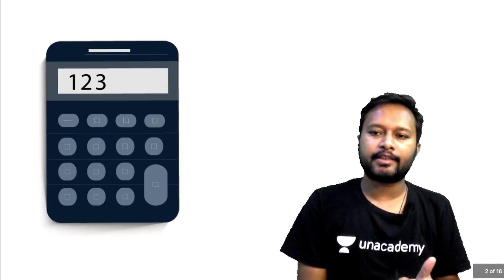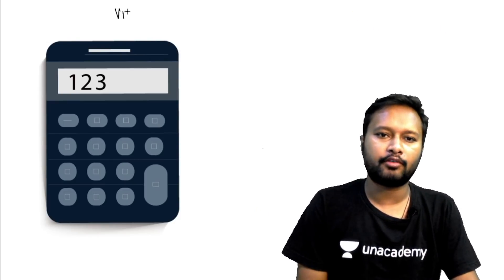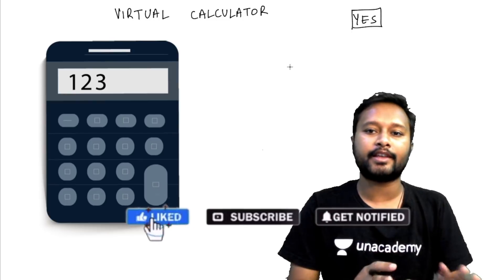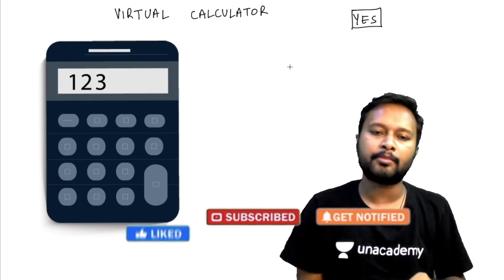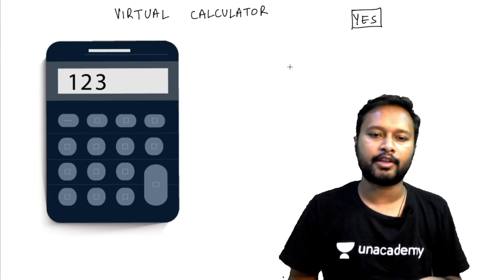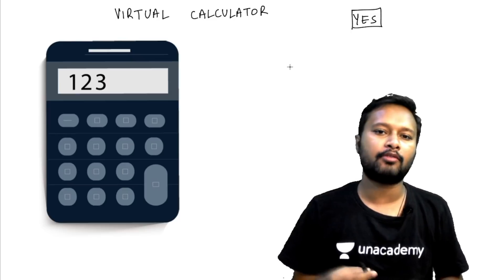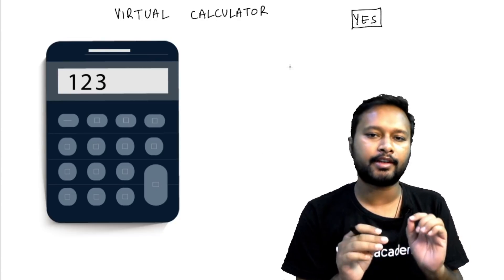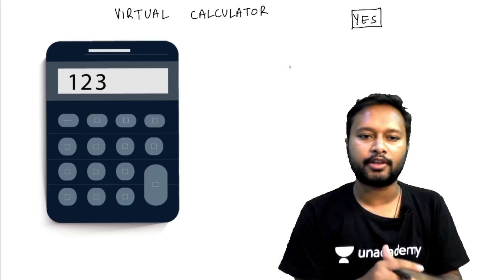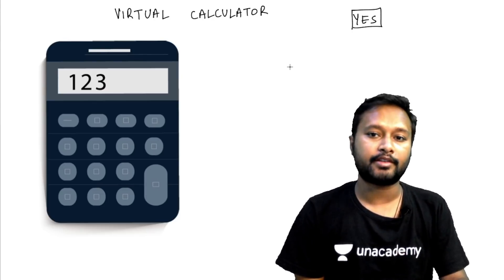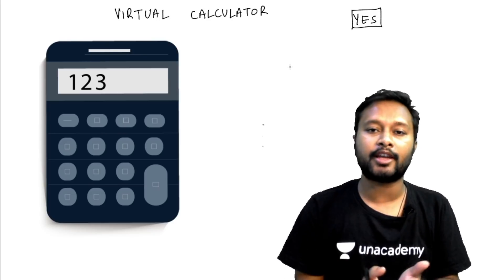The next thing is about the virtual calculator. Was the virtual calculator allowed? Yes, it was allowed for physical sciences students. I reconfirmed from that person and he said yes, this time the virtual calculator was there — earlier they also did not get a virtual calculator. Based on that, we can assume that for CSIR NET we are also going to get the virtual calculator. I'm not 100% sure but there are 80% chances that you will get it, and 20% chances the exam will be as usual.